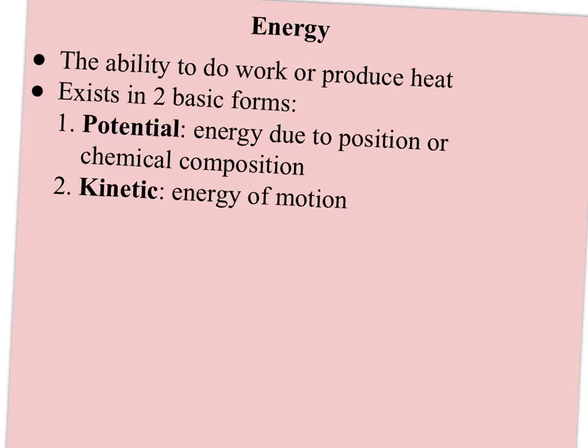Energy exists in two basic forms. Potential energy is energy you're not using - it's considered to be energy due to position, like when you have a little car wound up ready to go, or you're at the top of the ski hill ready to ski down. More importantly, potential energy is also stored in chemical bonds, so your chemical composition gives you a certain amount of potential energy. We usually read this on our food packages by looking at how many calories are in it.